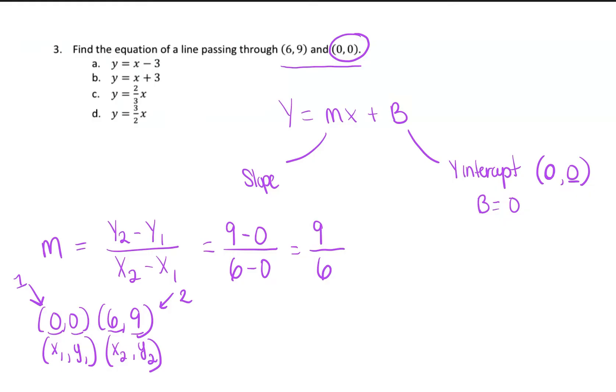But this fraction has to be reduced. Anytime you are getting an answer, and you have a fraction, always make sure that that fraction is all the way reduced. How do we reduce the fraction? Well, we have to find the greatest common factor of 9 and 6. What that means is we have to find the largest number that can go into both 9 and 6. And that number is 3.